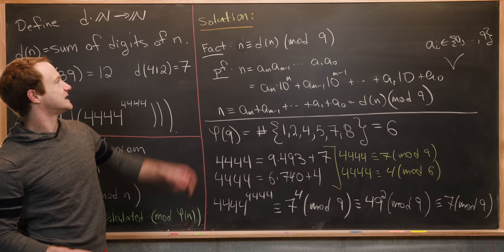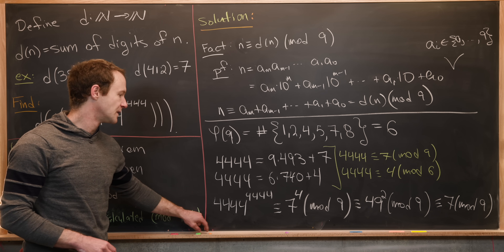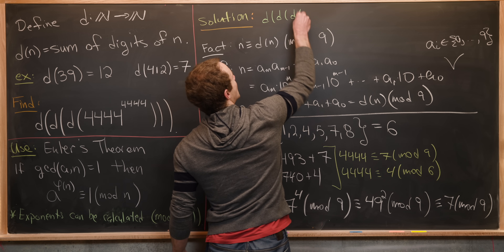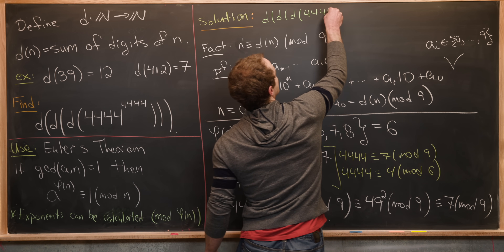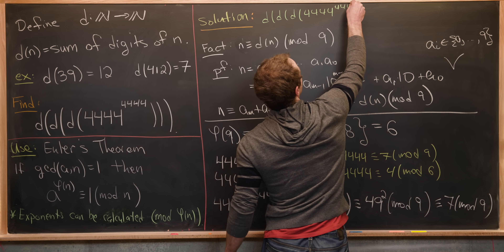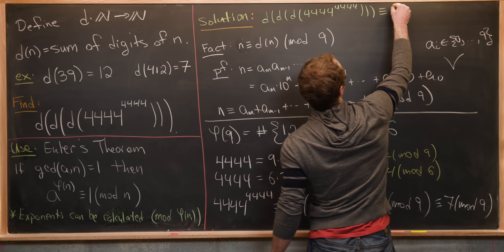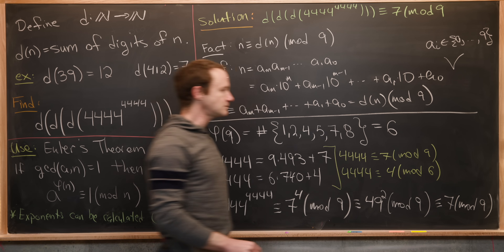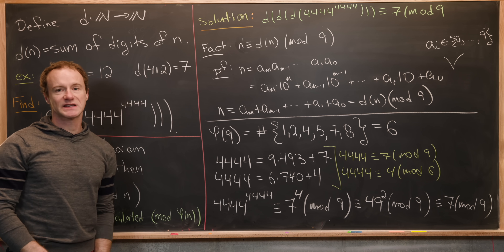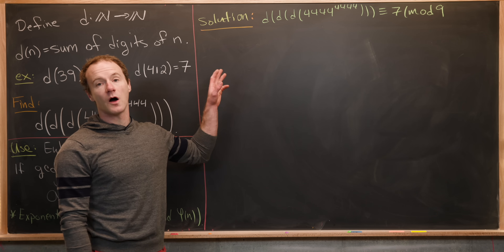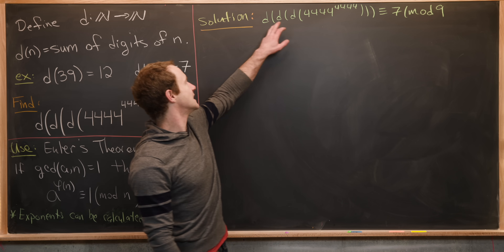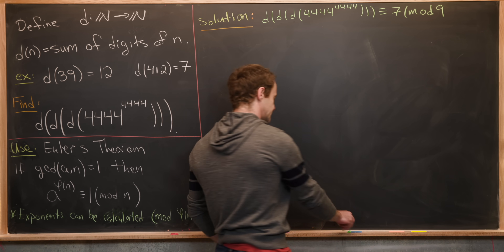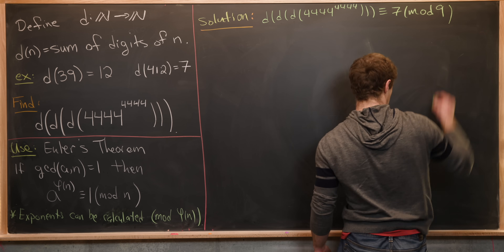Using our fact that n ≡ d(n) mod 9, it follows that d(d(d(4444^4444))) is also congruent to 7 mod 9. Now let's move on to the next step.